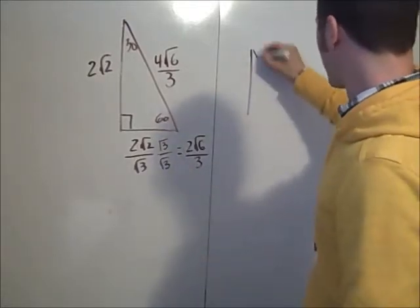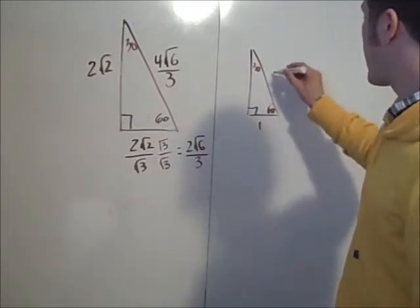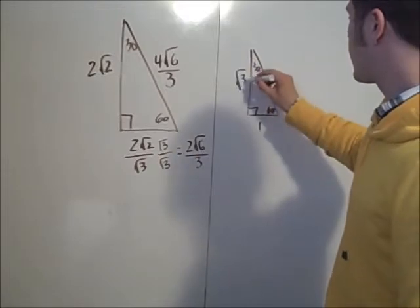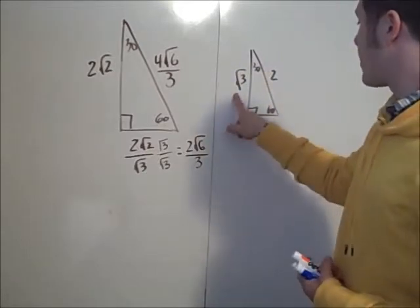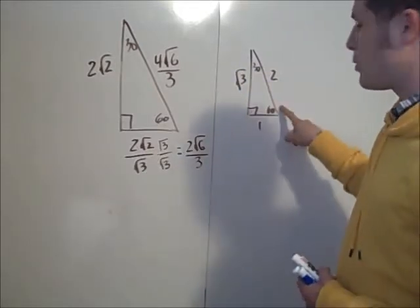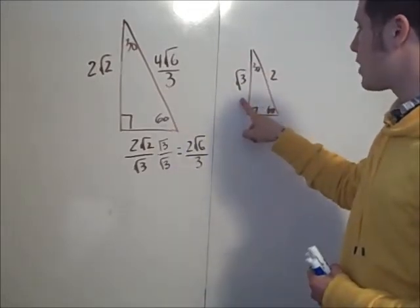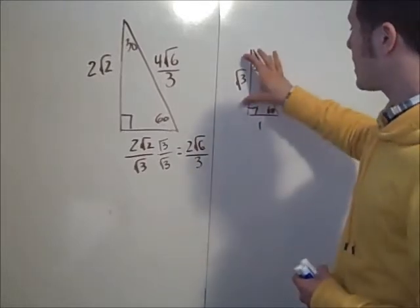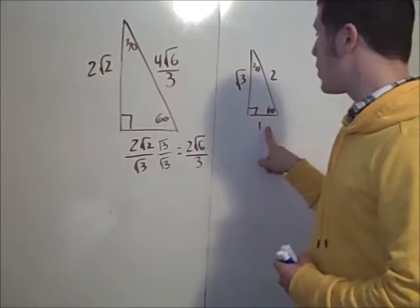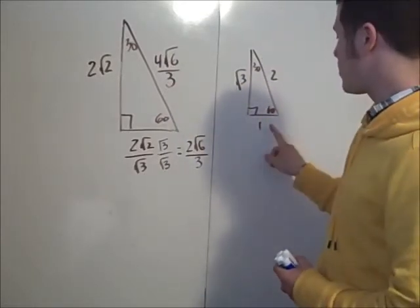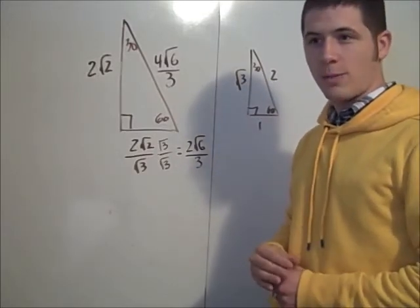To summarize: if you remember the base case for a 30-60-90 — where the side across from the 30 is 1, the hypotenuse is 2, and the side across from the 60 is √3 — you can always write a proportion. To go from the short side to the hypotenuse, multiply by 2. To go from the short side to the side across from the 60, multiply by √3. Reversing: divide by √3 to get from the 60-side to the 30-side, and divide by 2 to get from the hypotenuse to the 30-side. Good luck!